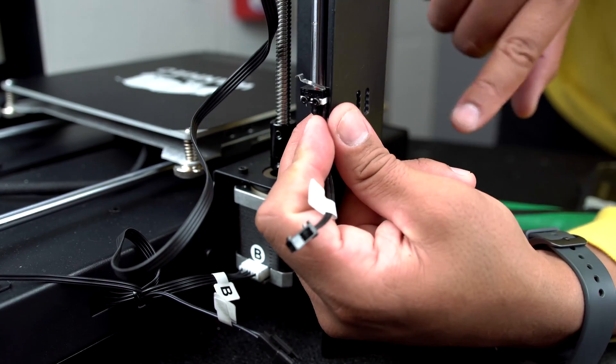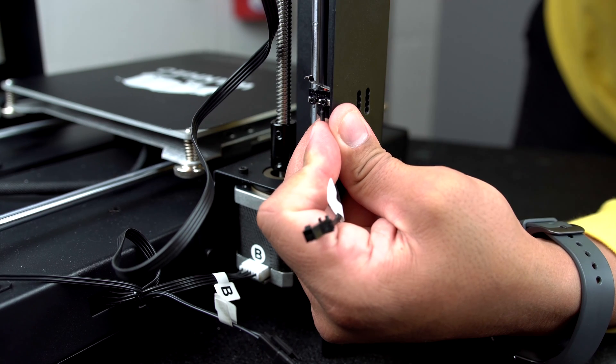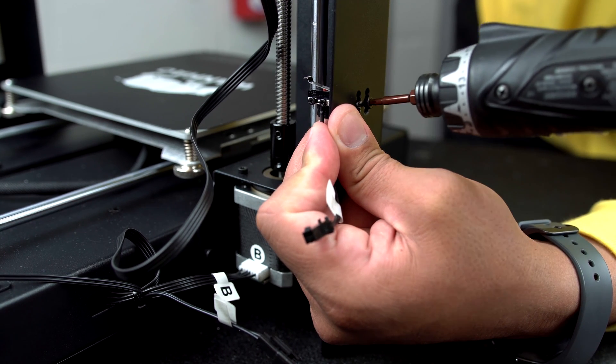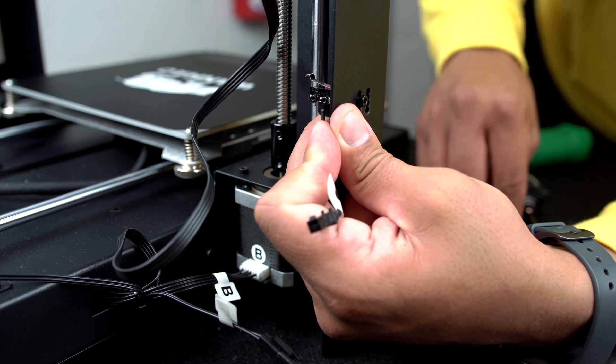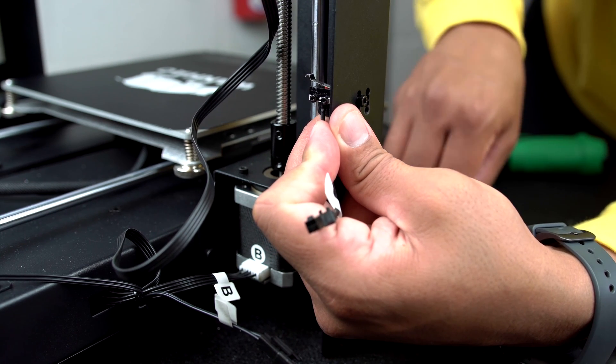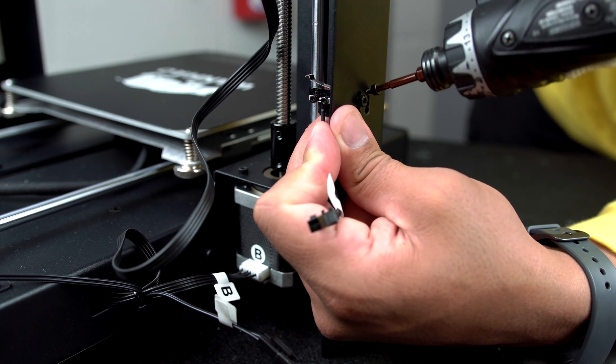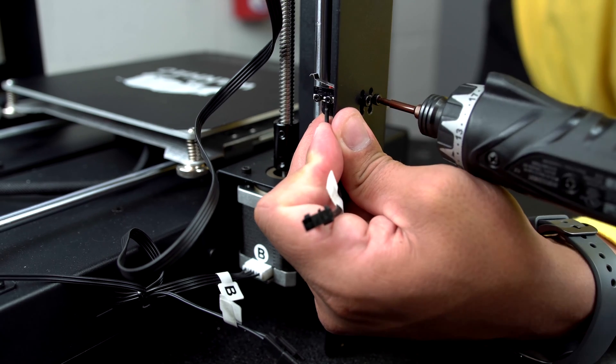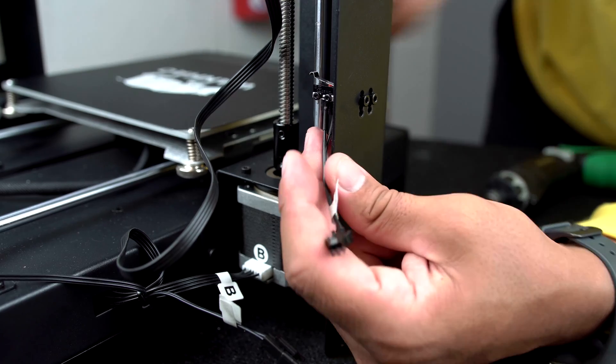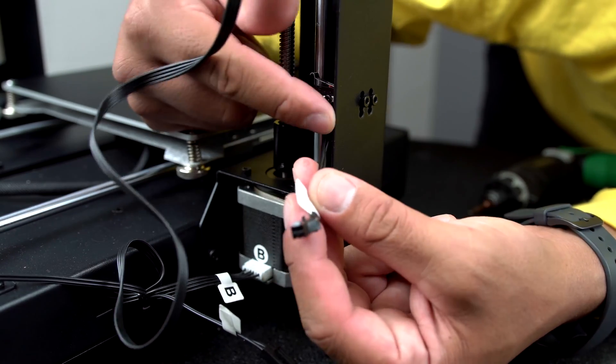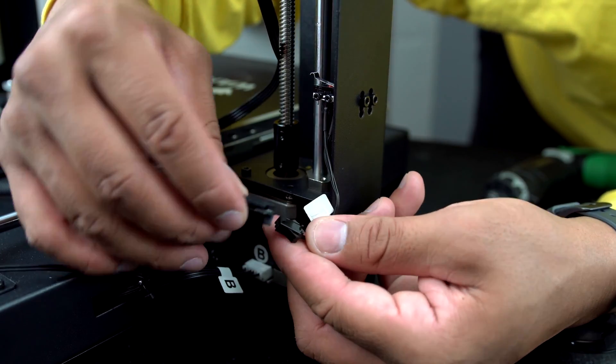Now mount the replacement end stop switch onto the frame using the two 1.5 millimeter screws you just removed. Connect the end stop switch with the end stop switch cable.